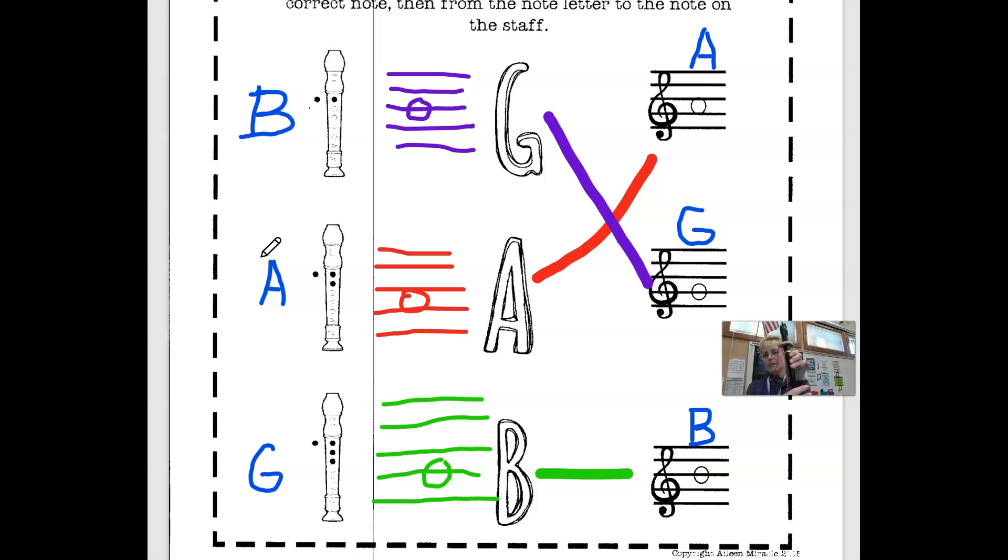And then a G is all three fingers down, and of course the thumb in the back is down almost all the time. So B is this, one finger only, A you put down your second finger down, and G you put down your third finger. B-A-G.